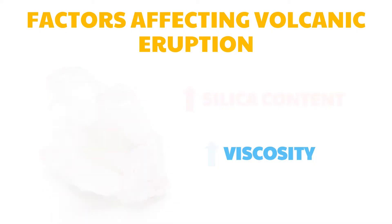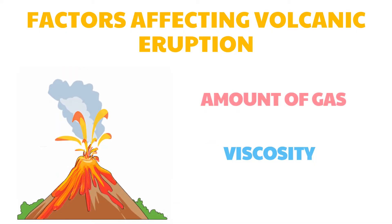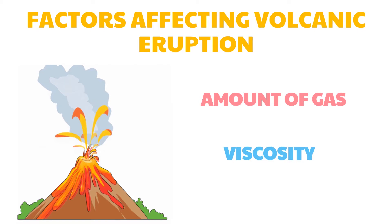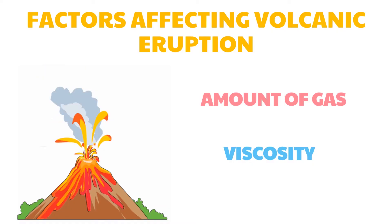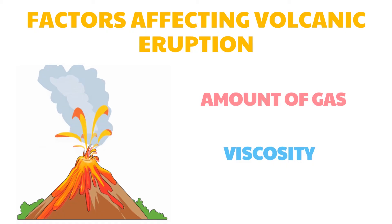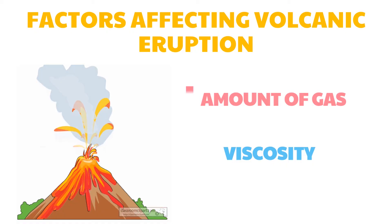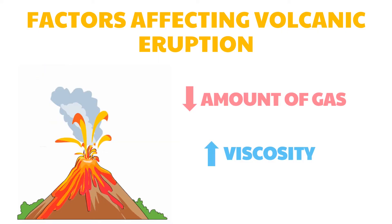Lastly, the amount of gases contained in the magma affects its viscosity. Gas — mainly water vapor dissolved in magma — tends to increase its ability to flow. Therefore, in near-surface environments, the loss of gases makes magma more viscous, forming a dome or a columnar structure.